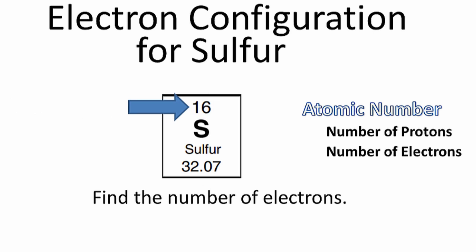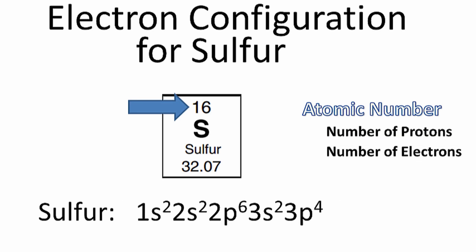That's the number above the element symbol. It represents the number of protons, but it also tells us the number of electrons. And once we have the number of electrons, we can find the electron configuration for sulfur.